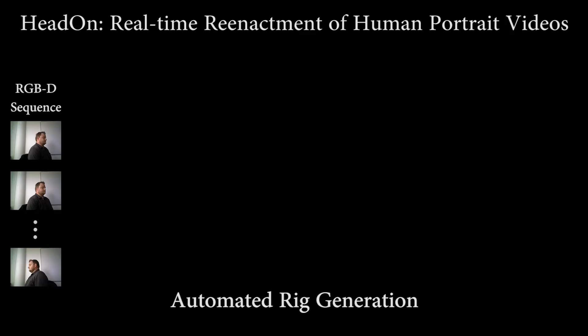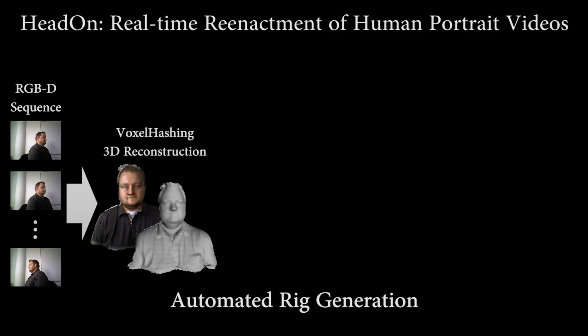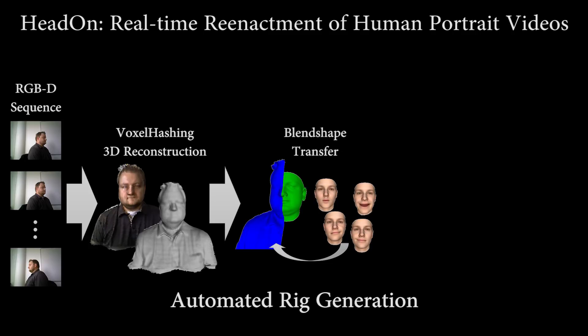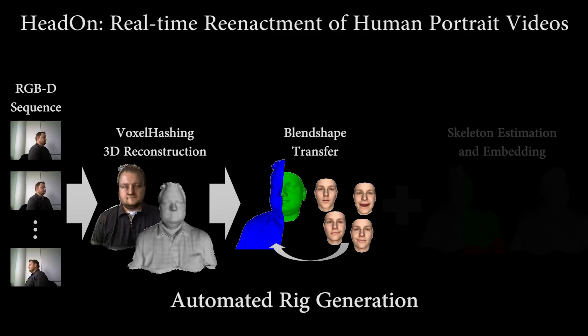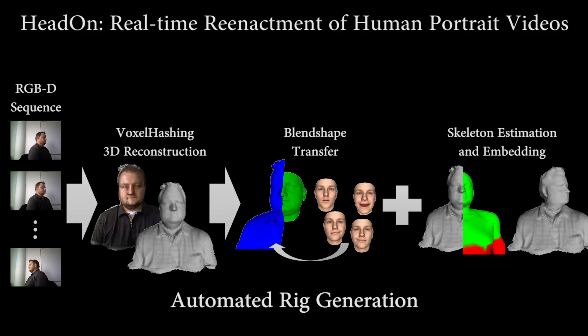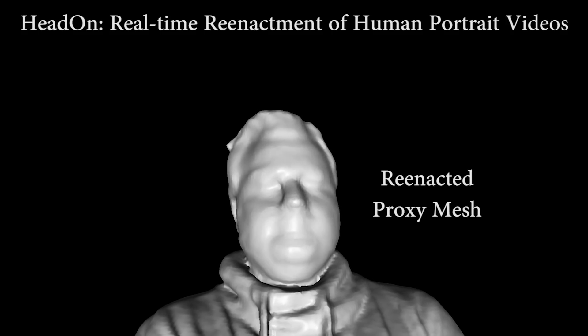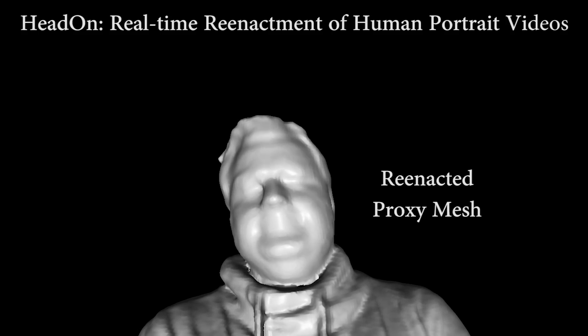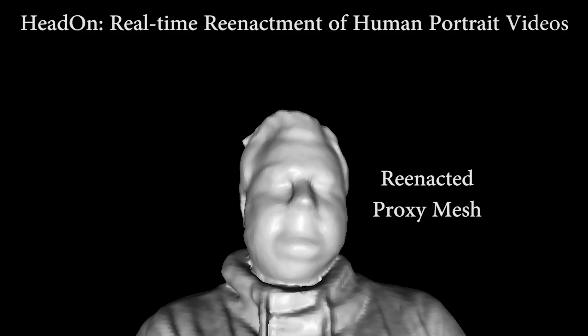HeadOn is based on a short RGBD video sequence of the target actor. From this sequence, we extract a proxy mesh using voxel hashing. To generate an animatable rig, a face template is automatically fit to this mesh. Using dense correspondences between the face mesh and the scanned mesh, we transfer blend shapes to the proxy. This automatic rigging enables us to fully animate the target proxy mesh.